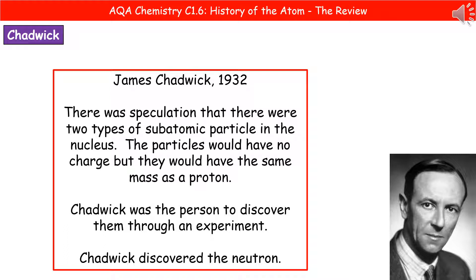The final scientist we need to know about is James Chadwick, who carried out his work in 1932. Around that time, there was speculation that there were two types of subatomic particle in the nucleus, but it was unknown what the second one was. They knew the nucleus had protons, but thought there must be something else — particles with no charge but the same mass as a proton. Chadwick was the one who actually discovered them through an experiment: his key contribution was discovering the neutron.